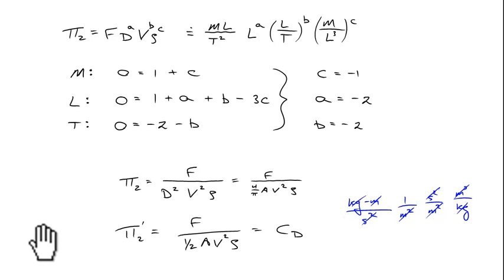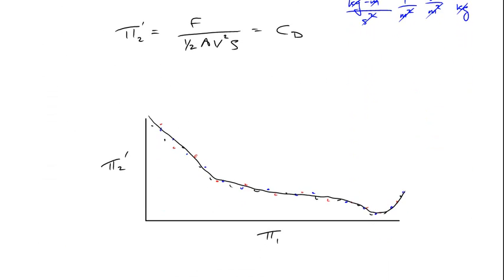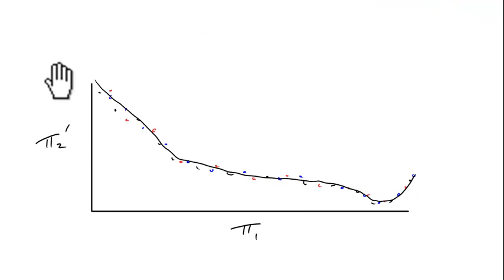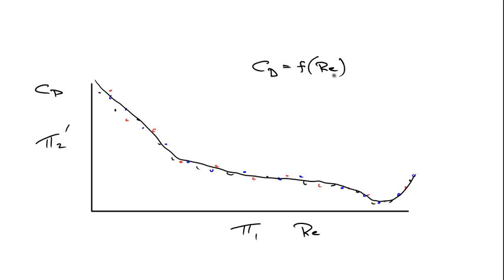So if we make a graph, this is the original graph: pi two prime is the coefficient of drag and pi one prime is the Reynolds number. This means the coefficient of drag is a function of the Reynolds number and the Reynolds number only. For all those different geometries and fluids, all you need to know is the Reynolds number and some experimental data, and that will give you the coefficient of drag.